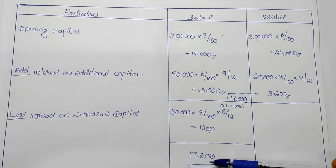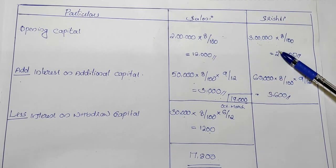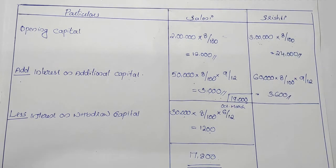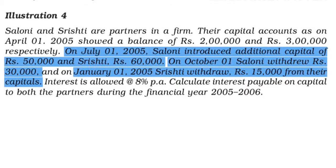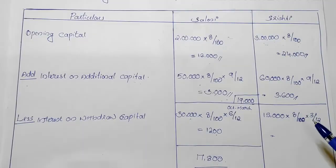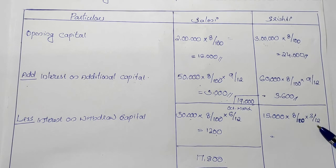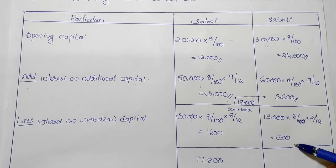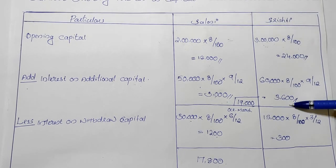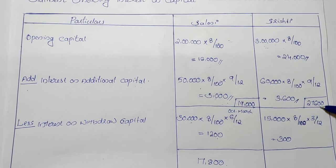We collect the interest on capital. In January 2006, we deducted the interest in January, February, and March. We are deducted by the amount of $300 and $27,600.